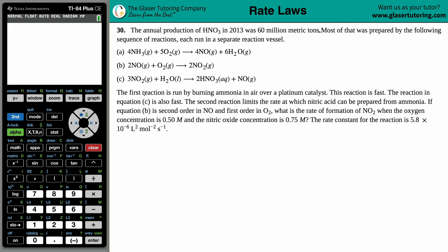Now, the first reaction is run by burning ammonia in air over a platinum catalyst. This reaction is fast. The reaction in equation C is also fast. The second reaction limits the rate at which nitric acid can be prepared from ammonia. If equation B, so that's important, if equation B is second order in NO and first order in O2, what is the rate of formation of NO2? When the oxygen concentration is 0.50 molarity and the nitric oxide concentration is 0.75 molarity, and the rate constant for the reaction is 5.8 times 10 to the negative sixth liters squared per mole squared per second. Okay, so let's get down to business, shall we?